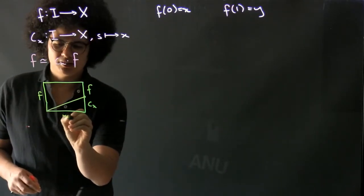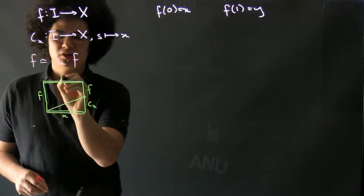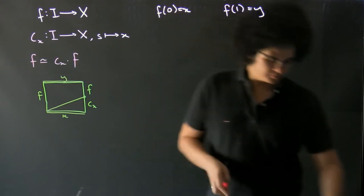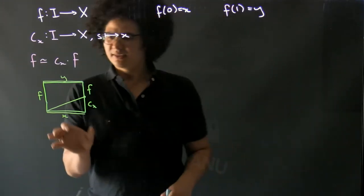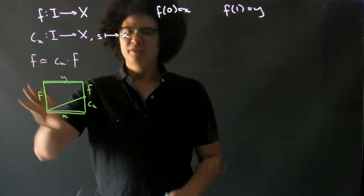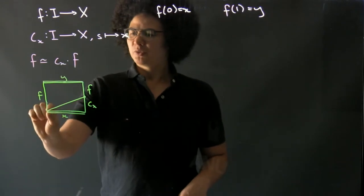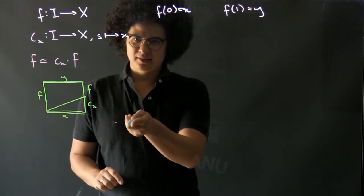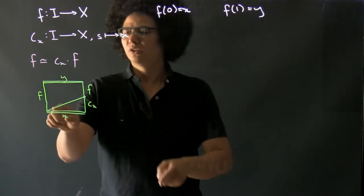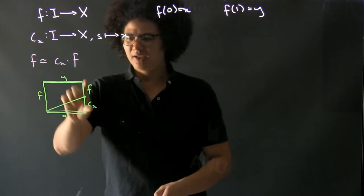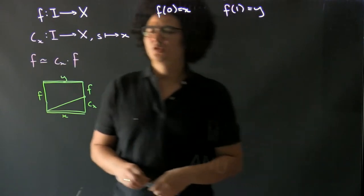Along the bottom here we're just constant at x, along the top here we're constant at y. Basically what this says is we start off by doing f, and then at the end we increase the amount of time we wait at the initial point before we do f, and then we do f at whatever speed we need to get it done by the end. So at the end, we wait for half the interval at x and then we do f at double speed.